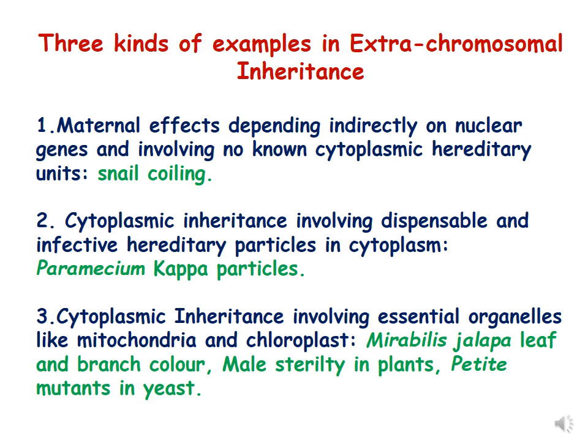The second type of extrachromosomal inheritance involves dispensable and infective hereditary particles in the cytoplasm. This includes the example of paramecium; the particles responsible are called kappa particles. The third type involves essential organelles like mitochondria and chloroplast, and includes the examples of Mirabilis Jalapa leaf variegation and branch color, male sterility in plants, and petite mutants in yeast.